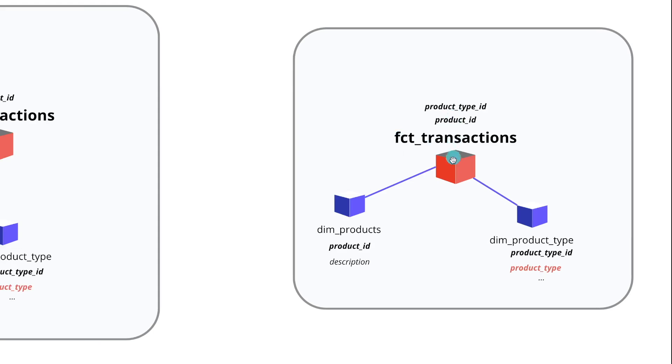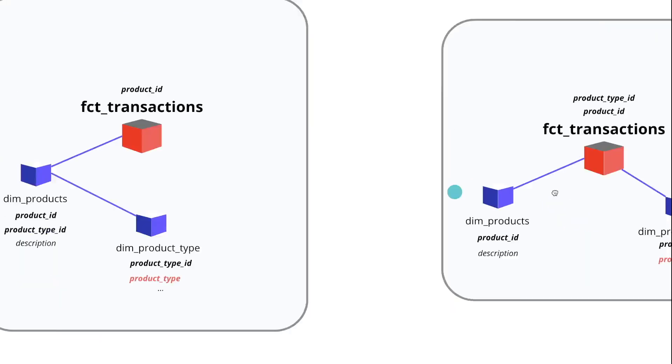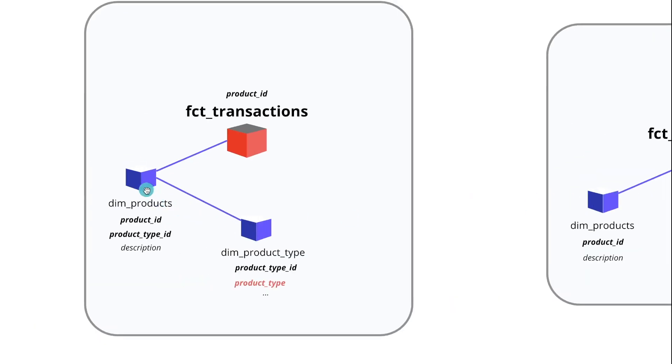You could be following a different data modeling approach — for example, more like the traditional Inmon approach, which I have another video on. But in my opinion, if you're going to go the fact-and-dimensions route, it's important to maintain the concept and consistency of a star schema. To create a true star schema, you almost always want to join the fact directly to a dimension, not dimension to dimension directly. There are always edge cases, but you're going to get many-to-many relationships, things are going to blow up, and you'll get a lot of duplicates most of the time.